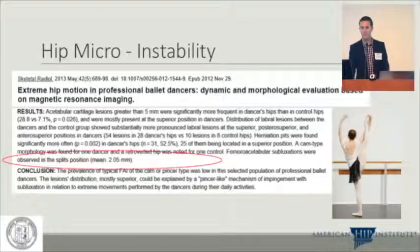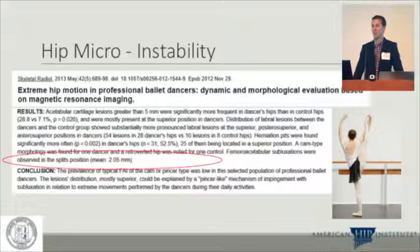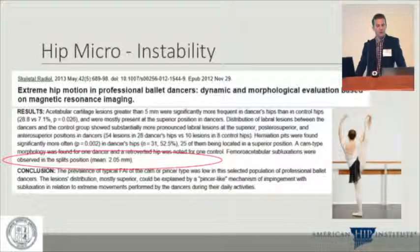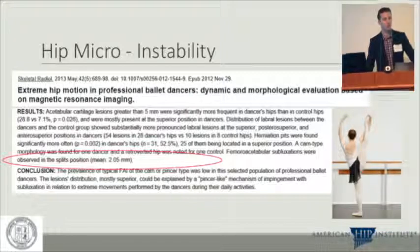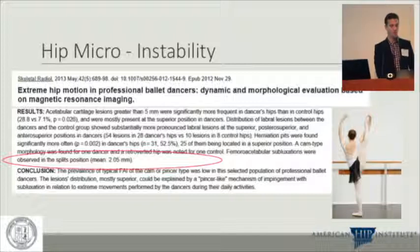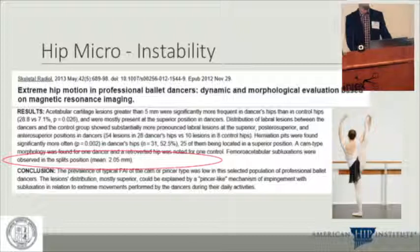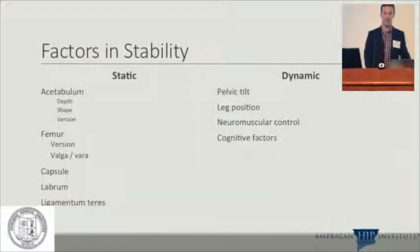Here's a study — not the greatest regarding its methods — but they put ballerinas in MRI machines during the splits and showed that the femoroacetabular joint subluxed 2.05 millimeters. There are other problems with this study, but we won't get into those.